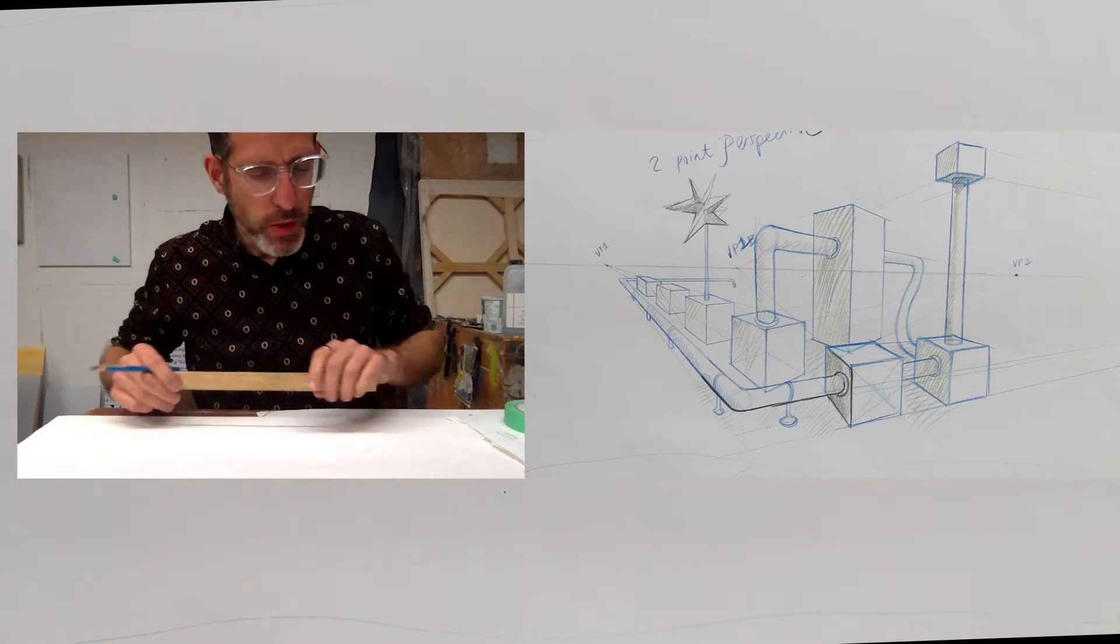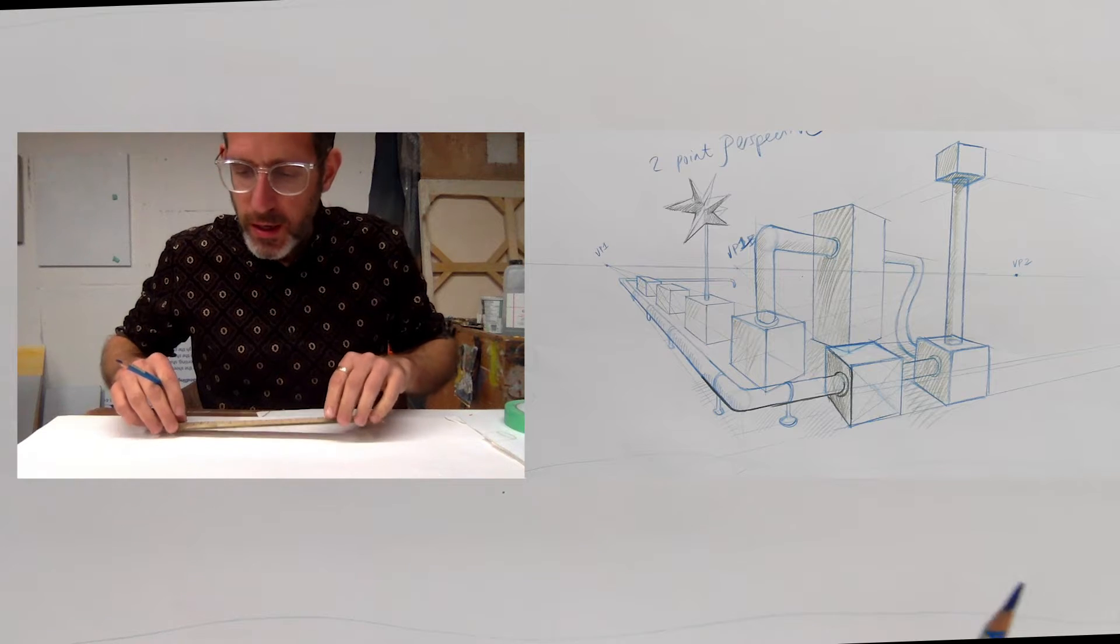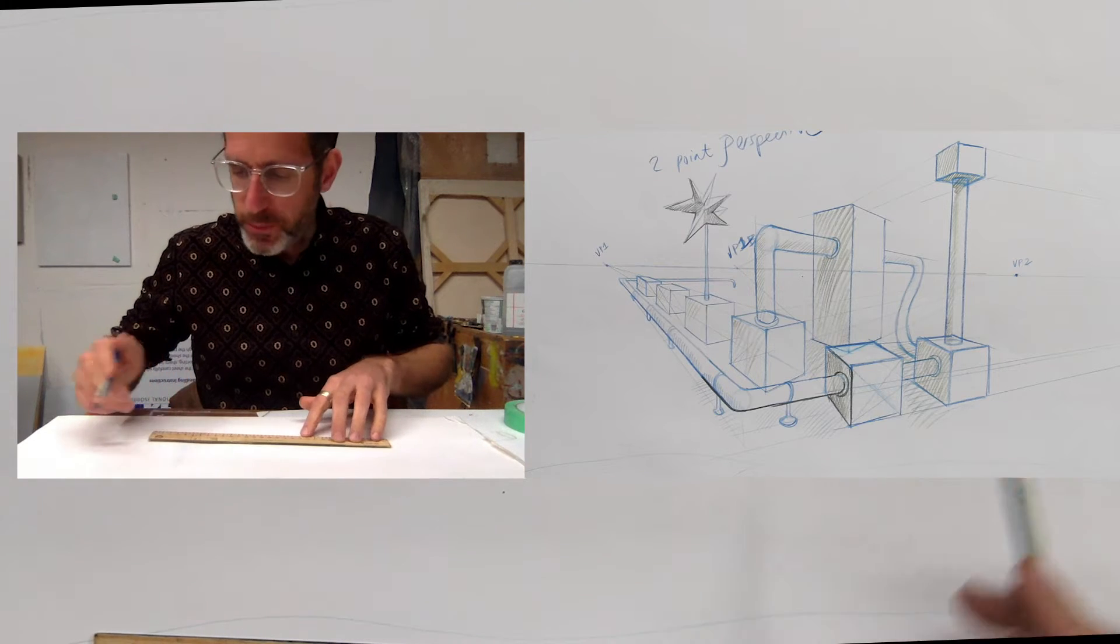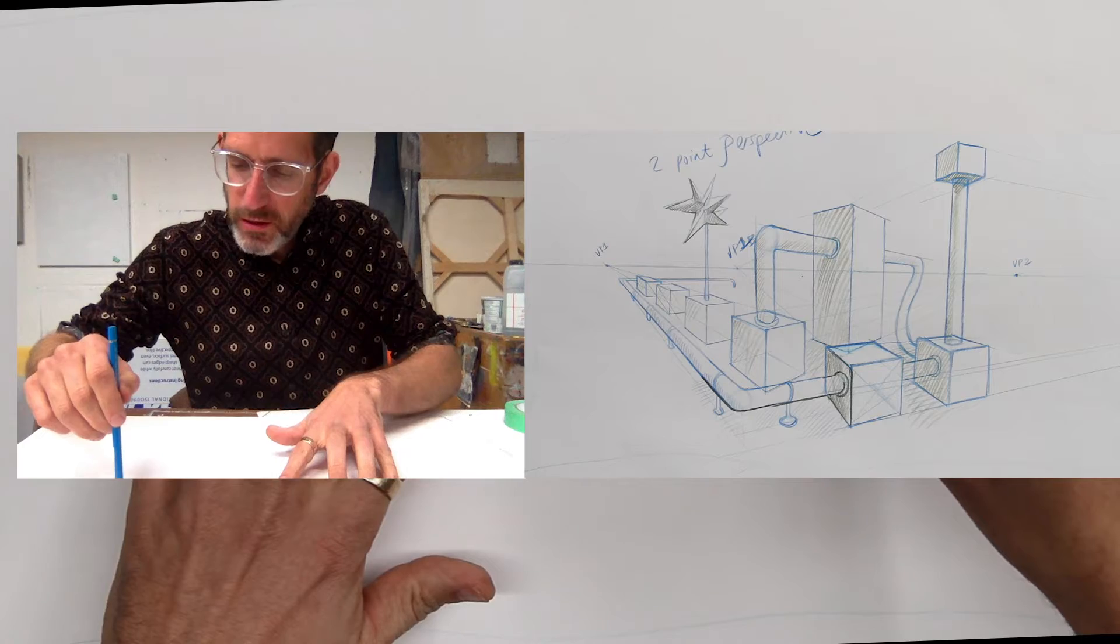Okay, let's play around with two-point perspective. We're going to play around with some boxes a little bit and moving things around in space.